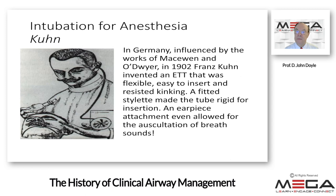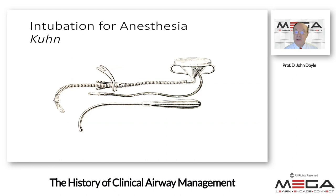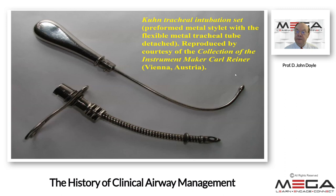McEwen used both gum elastic and flexometallic type tubes inserted into the glottic aperture. Another innovator, Franz Kuhn, influenced by McEwen, invented in 1902 an endotracheal tube that was flexible, easy to insert, and resisted kinking. A fitted stylet enabled blind insertion, and an earpiece attachment even allowed auscultation of breath sounds, helping the practitioner monitor the patient. The device shown is a flexometallic tube with an introducer and a means to deliver anesthetic agent.